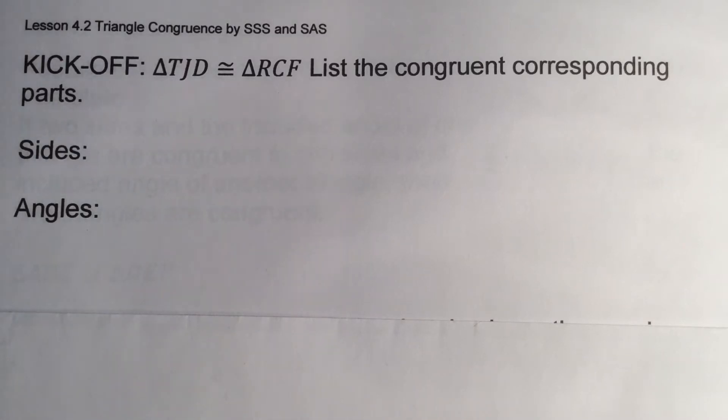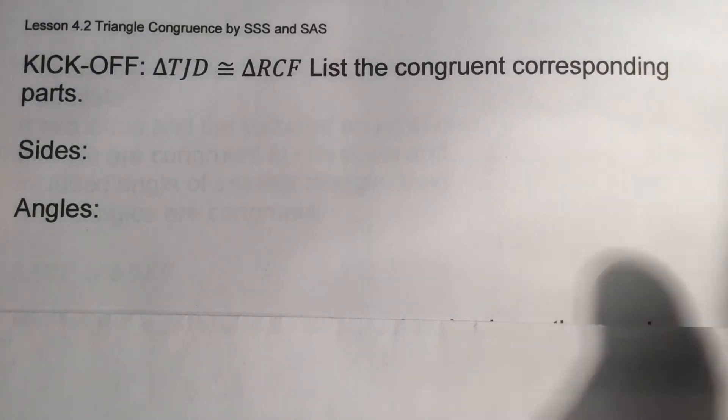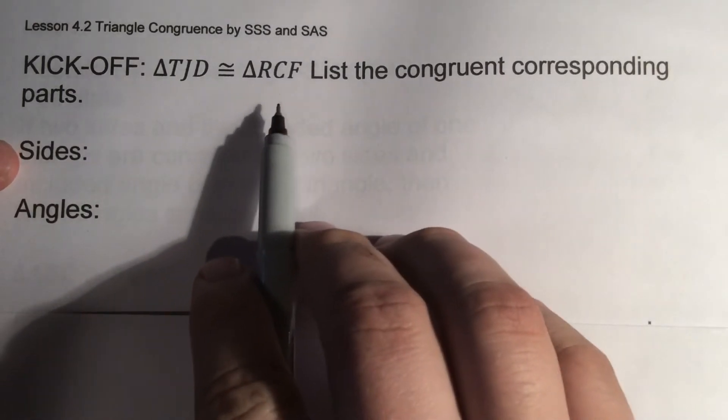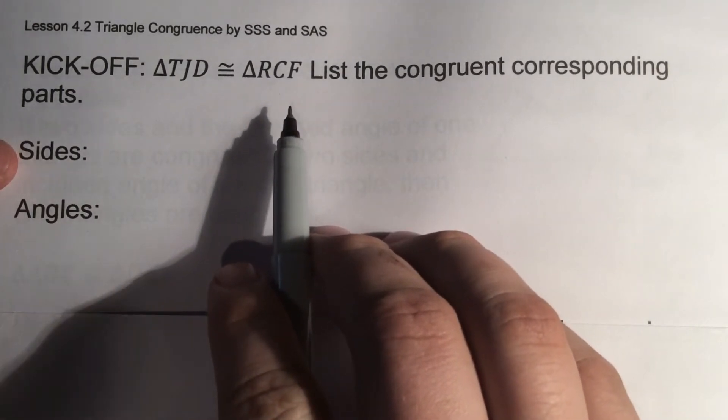Alright, continuing on through Lesson 4-2 in Chapter 4. We're going to start getting into two different ways: SSS, which is side-side-side, and SAS, side-angle-side, which are ways that we need to know less information in order to prove triangles are congruent. Before we do that, we have our two triangles that are congruent here, Triangle TJD and Triangle RCF. We're going to list out what's congruent.